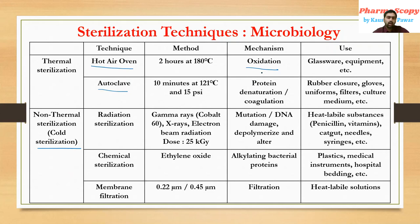In radiation sterilization, we use gamma rays produced from cobalt-60 — that is important. In GPAT 2012, there was a question on radiation sterilization and the correct answer was cobalt-60. We also use X-rays and electron beam radiation. The important parameter to remember is the dose of gamma rays, which is 25 kilo-Gray (25 kGy).